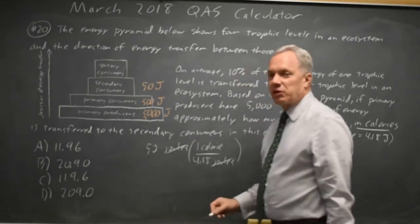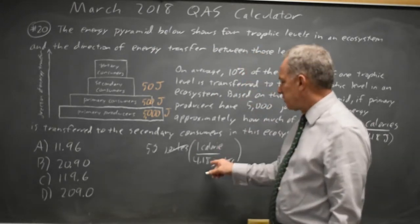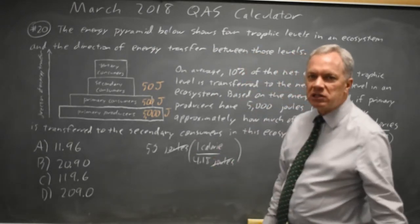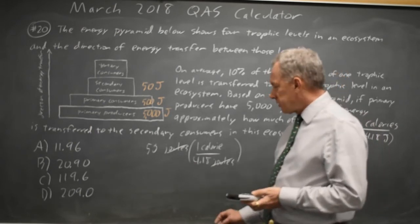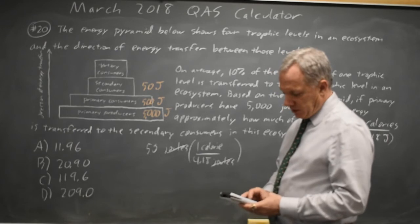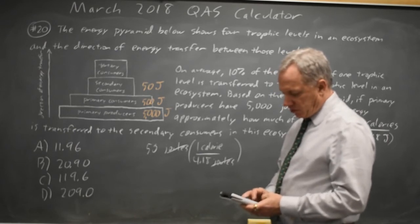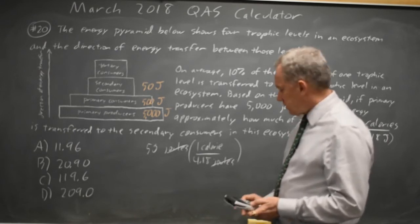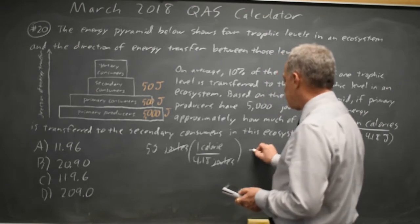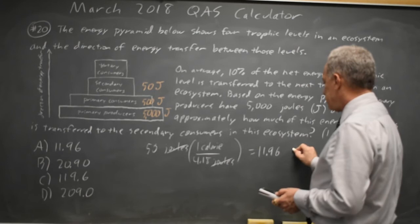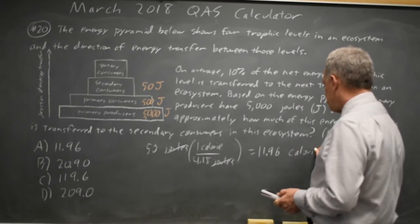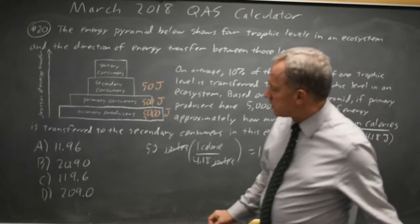Notice that I was multiplying by a fraction equal to 1 because 1 calorie equals 4.18 joules. When you multiply by an expression equal to 1, you're not changing the value. So the correct answer in calories would be 50 over 4.18, which is 11.96 calories. Choice A.